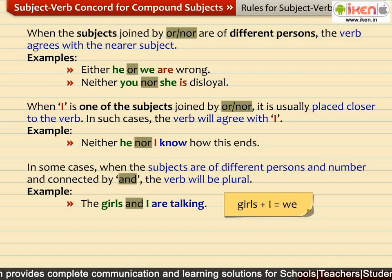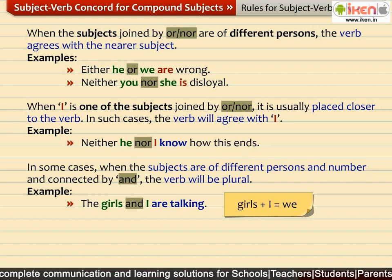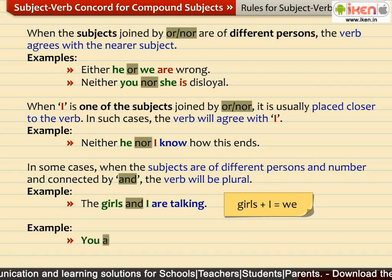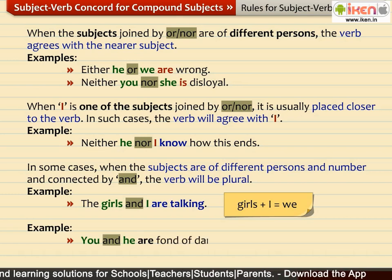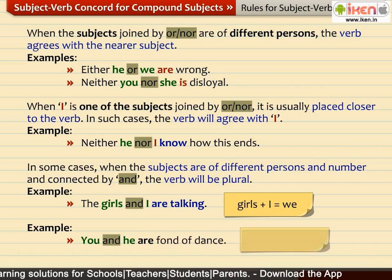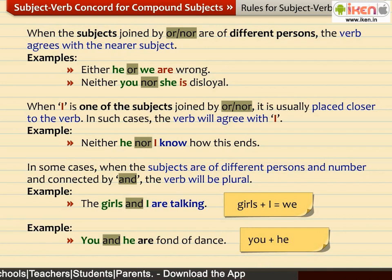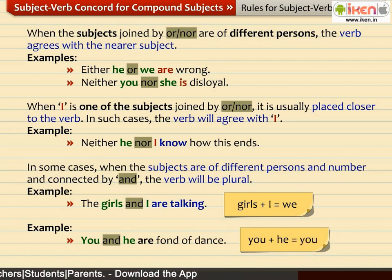Hence the verb is plural. Look at the other sentence: 'You and he are fond of dance.' YOU AND HE can be spoken of as the plural YOU, hence it takes the plural verb ARE.